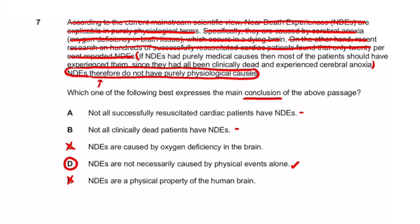Answer E: 'NDEs are physical properties of the human brain' — the passage is mainly talking about the causes of NDEs, not what NDEs are themselves, so this can't be right. To knock out B — 'not all clinically dead patients have NDEs' — the passage is talking about the cause of NDEs, not who has them. And A — 'not all successfully resuscitated cardiac patients have NDEs' — this refers to just one specific part of the passage, and the main conclusion isn't about cardiac patients specifically. Therefore, through elimination, D is correct.